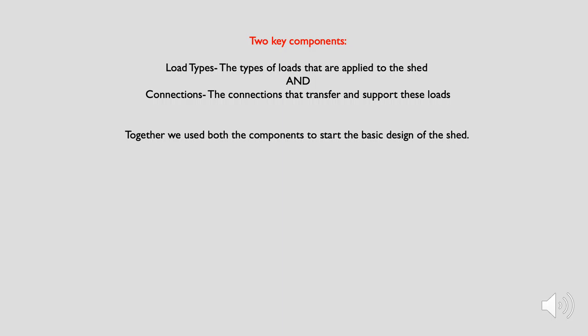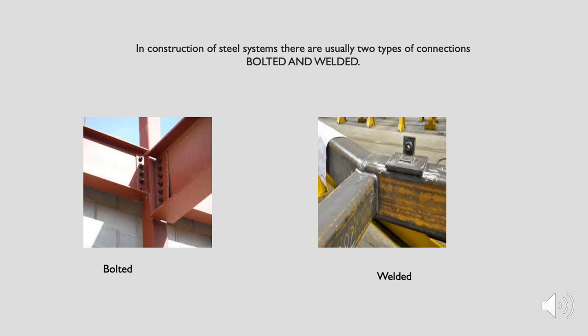Two key components are load types — the types of loads applied to the shed — and connections, which transfer and support these loads. Together, we use both components to start the basic design of the shed. In construction of steel systems, there are usually two types of connections: bolted and welded. These connections are designed to have precise rigidity and are designed in different but unique ways to support the loads for the domestic shed.